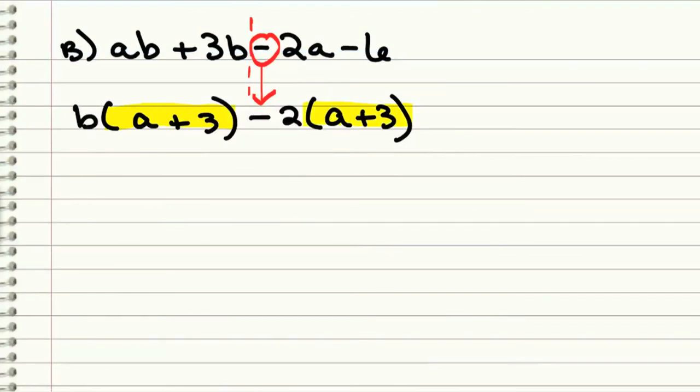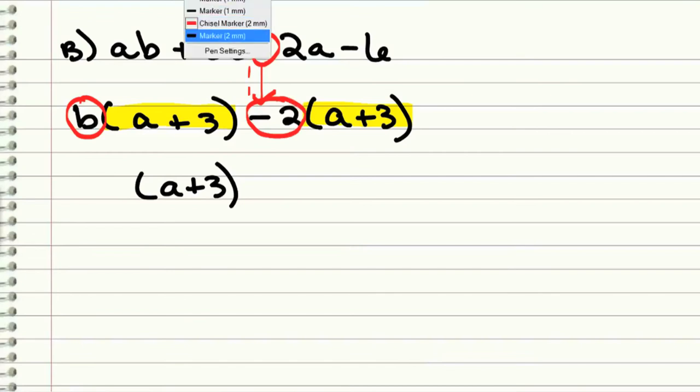Luckily for us, the binomials are alike. So that leaves us with a + 3 as one of our factors. And then our other factor is made up from our GCFs, b - 2.